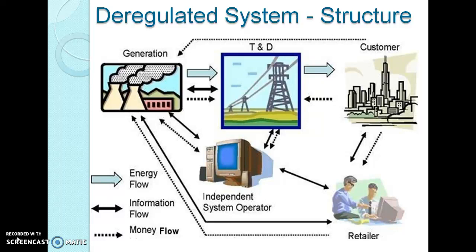In the deregulated power system diagram, the bold line shows the energy flow, the bold line shows the information flow, and the dotted line shows the money flow. From the structure, we can understand that the ISO — that is, the Independent System Operator — will oversee the power exchanges between the power system entities. It supervises all the operations in the structure.